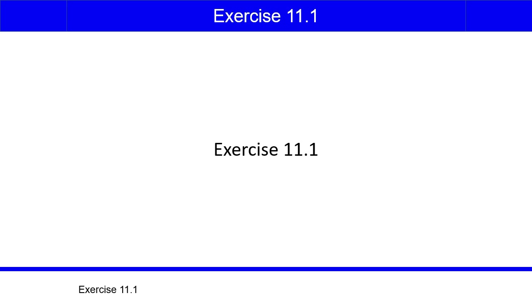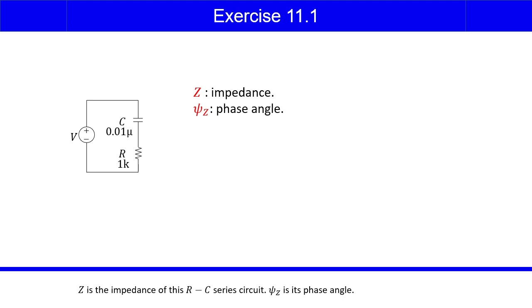Exercise 11.1. Z is the impedance of this RC series circuit. Psi Z is its phase angle.